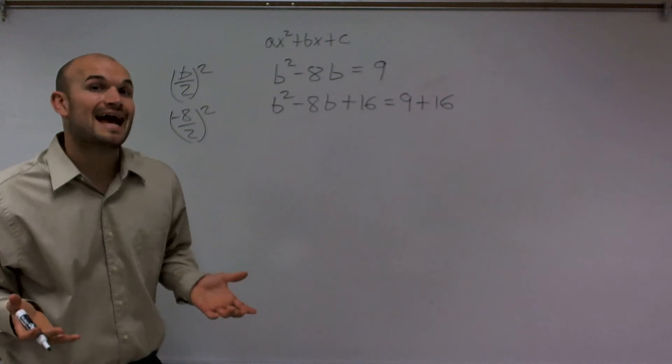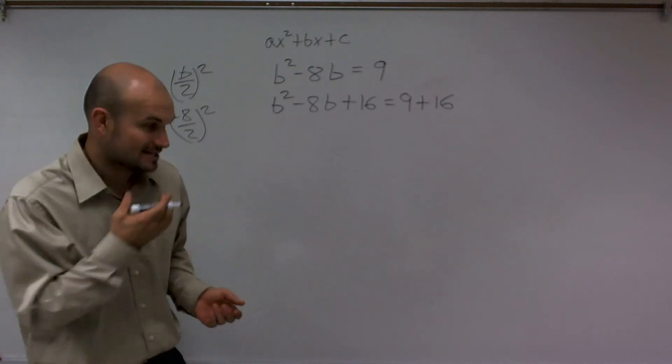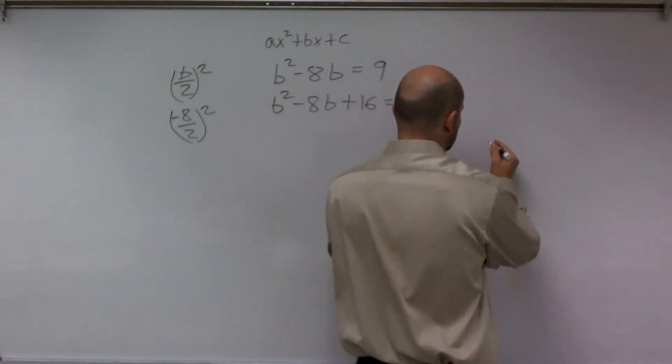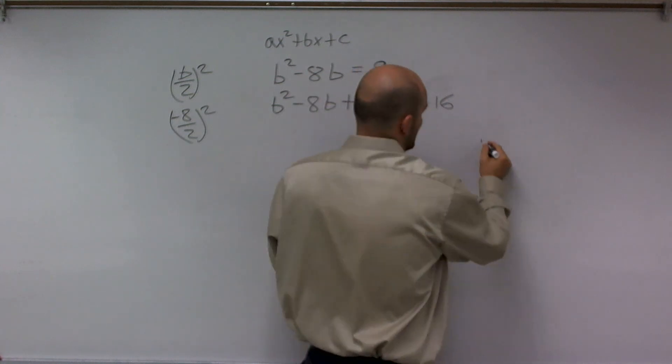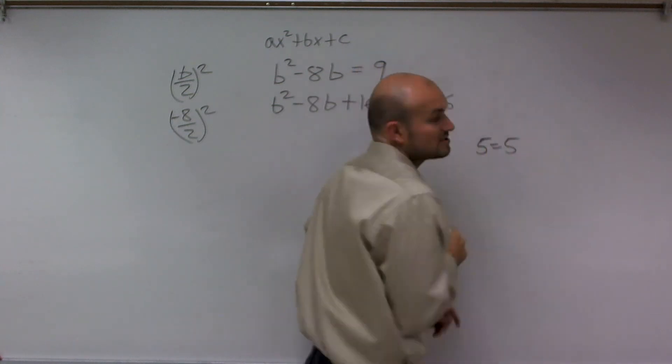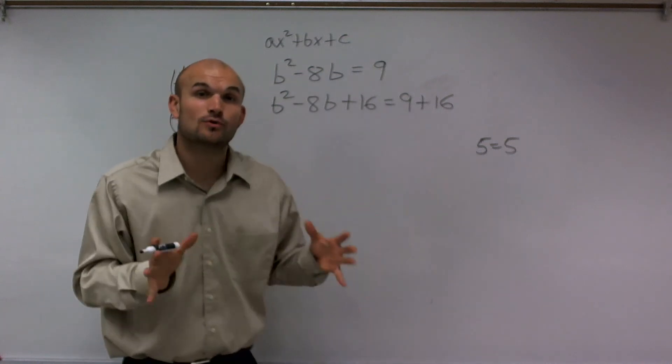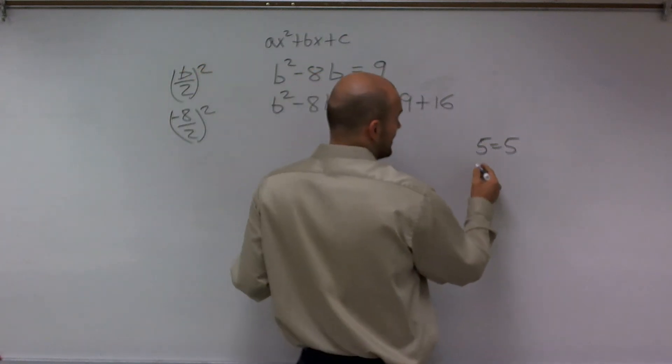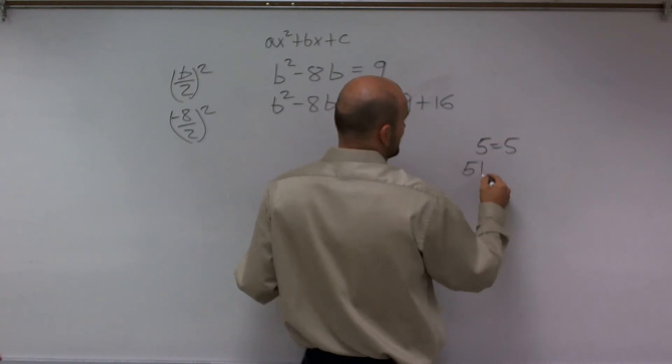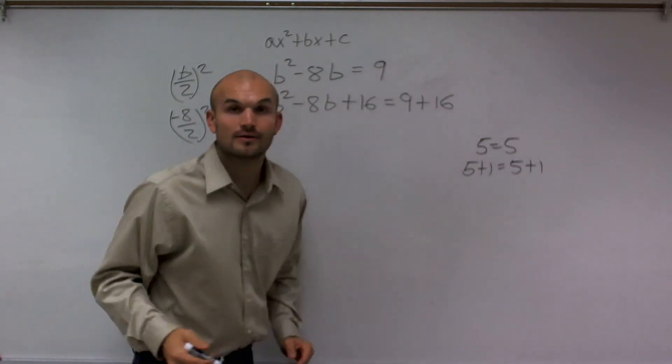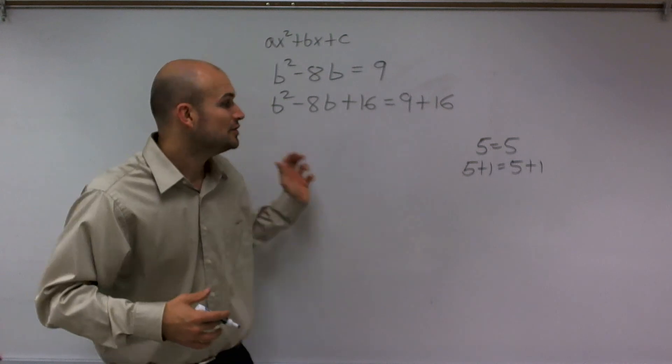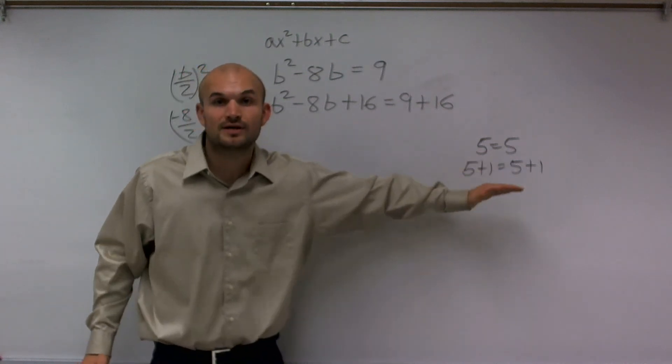Why do I have to add 16 onto both sides? Let's take a look at a regular linear equation. I have 5 equals 5, correct? To keep an equation exactly the same, you would have to say 5 plus 1 equals 5 plus 1. Whatever you do on one side, you have to do on the other side.